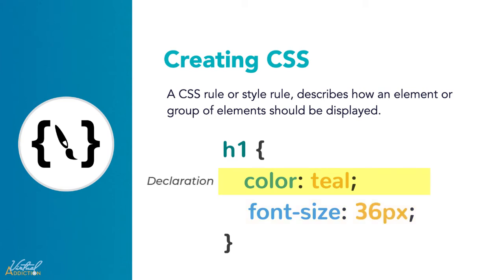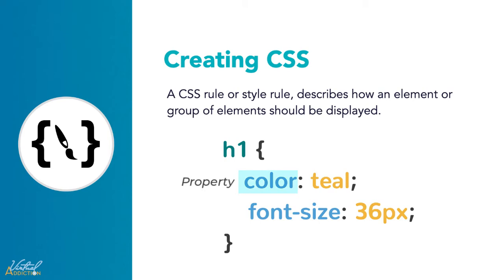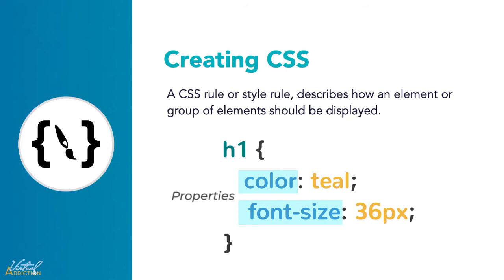Declarations are the individual style rules and are written using the property-value pair. The property is always separated from the value with a colon, and the declaration statement is always terminated with a semicolon to indicate that the rule is complete. In this example, color and font size are properties which refer to the style characteristics to be applied to the element, and the values are specific to that property and may vary depending on the property type.